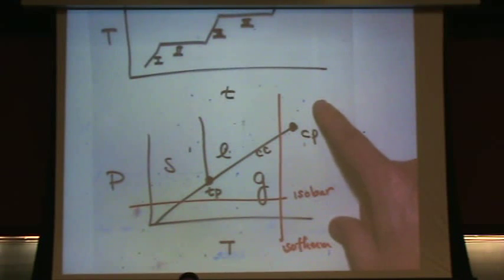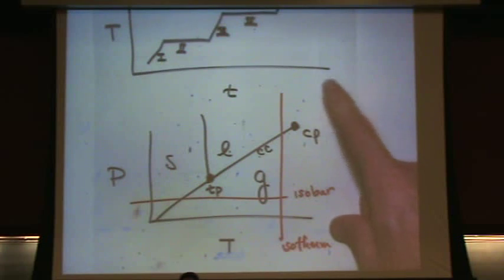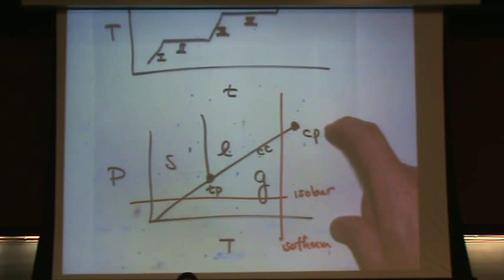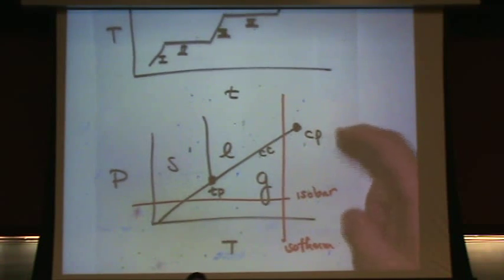So, that means after this, there's no liquid gas boundary anymore. This is just one entity, and we call this entity a supercritical fluid. It looks like something between a gas and a liquid. Yes?